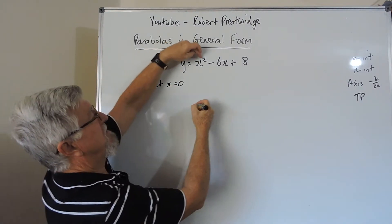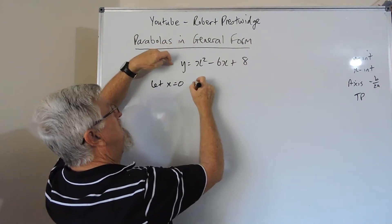We let x equal 0, we get the y-intercept. So there's a 0, a 0, we're left with an 8, y equals 8.